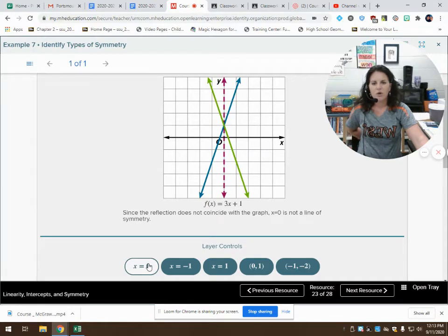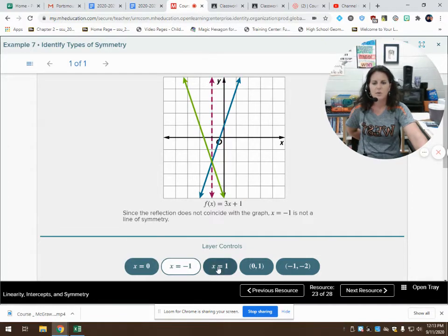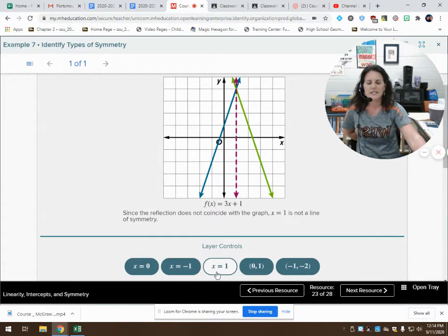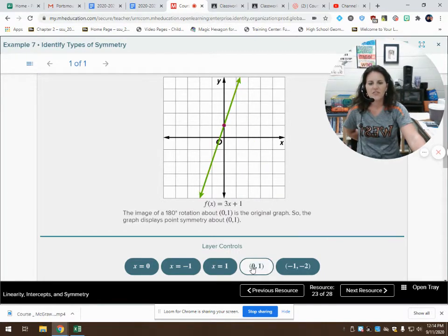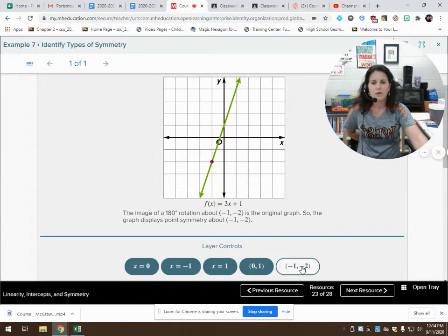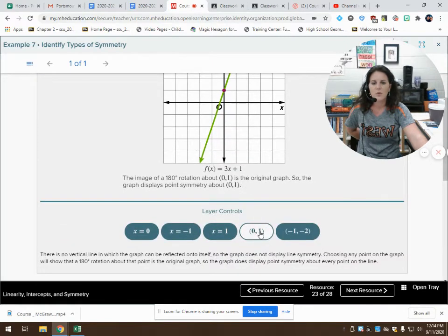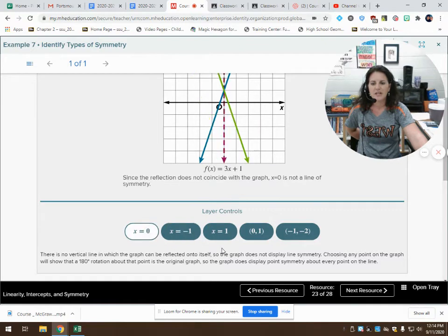Let's look at it. If I draw a line through x equals 0, it doesn't seem to work. How about x equals negative 1? That doesn't work. x equals a positive 1. That doesn't work. So reflecting it across a line doesn't seem to be working. Let's see if it works if I rotate it around a point. That worked. What if I rotate it around this point? It still seems to work. So the image of 180 degrees rotation is back to the original graph. Therefore, the graph displays point symmetry about either one of these points. But it does not have line symmetry on any of these lines. There's no vertical line in which the graph can be reflected back onto itself. Therefore, this graph does not display line symmetry.